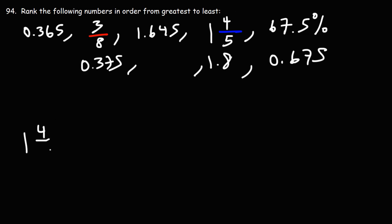So we're going to write it in its original form. So that is greater than the next highest number, which is 1.645. And then after that, between these three, 0.675 is greatest. So we'll write it in its original format, 67.5%.